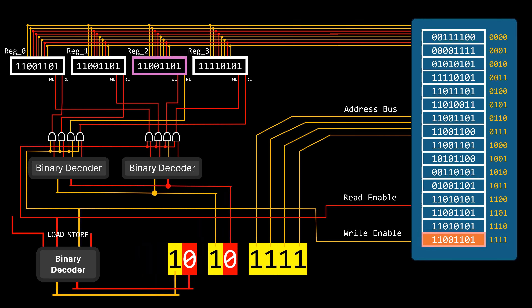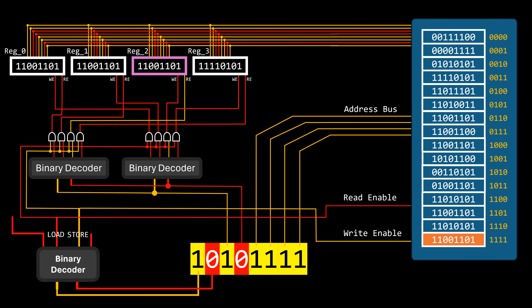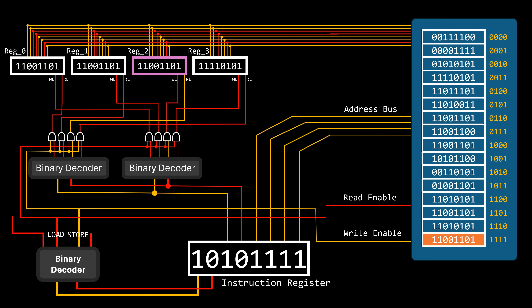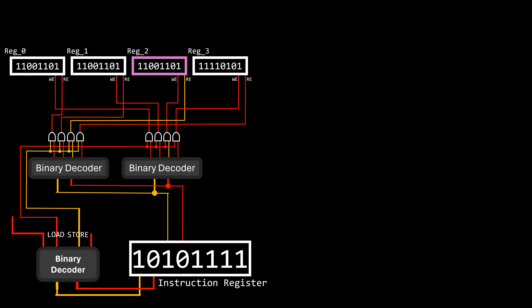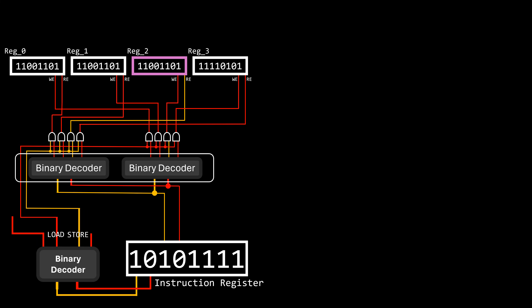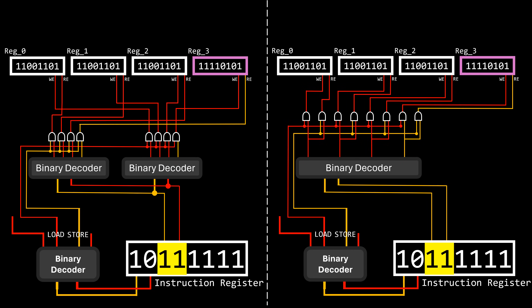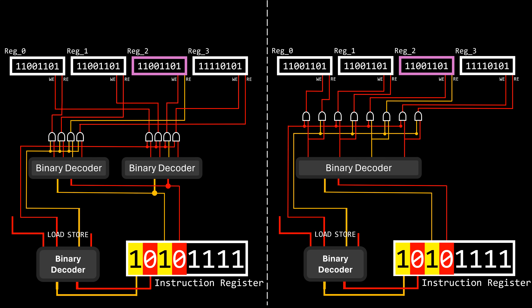Now we know that the input of all these components comes from the instruction itself. Before executing an instruction, it needs to be loaded into a special register called the instruction register, whose output data lines serve as input for the components that decode the instruction. Some of you may notice this part of the circuit can be improved — both load and store instructions use the third and fourth bits to indicate the register, so a single decoder could achieve the same result. Here we're focusing on fundamentals, not the fastest or most modern methods.